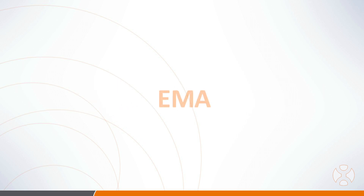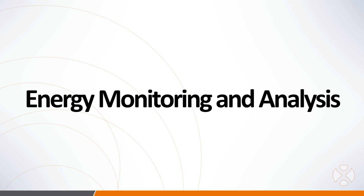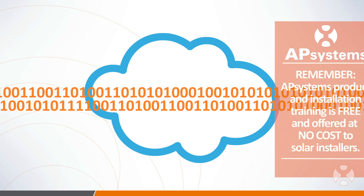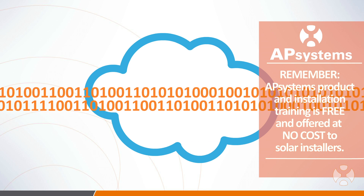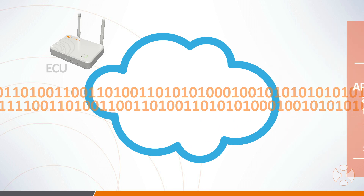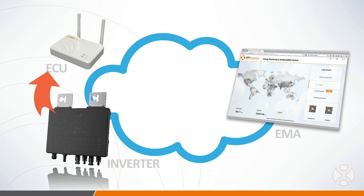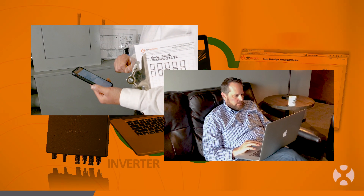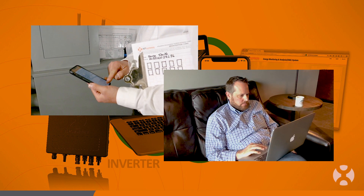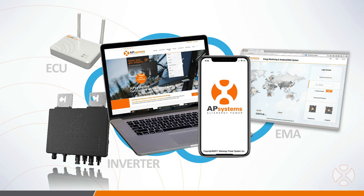The EMA, which stands for Energy Monitoring and Analysis, is the AP Systems cloud platform for recording and displaying the solar system performance. Once commissioned, the ECU, or Energy Communication Unit, will act as the gateway between the microinverters and the EMA platform, allowing installers and end users to see the solar array power production from any internet-connected computer or smartphone.